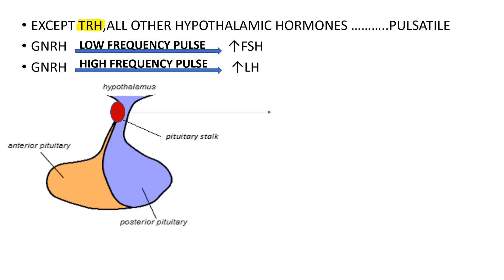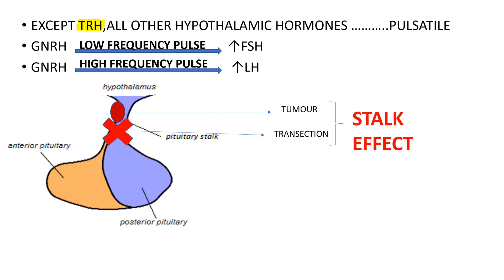If there is a hypothalamic tumor causing transection of the pituitary stalk, that condition is called the Stoke Effect. The Stoke Effect results from loss of hypothalamic hormonal input to the pituitary, and the main item involved is dopamine.